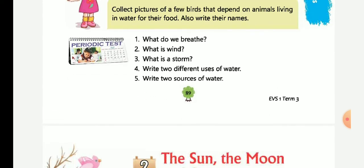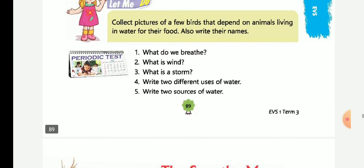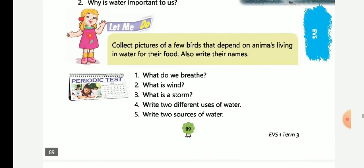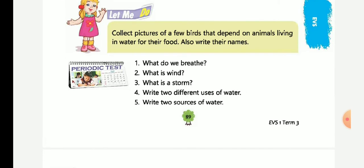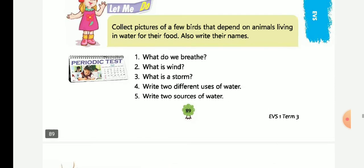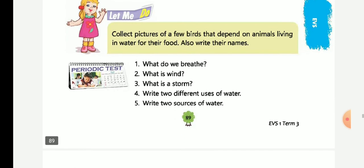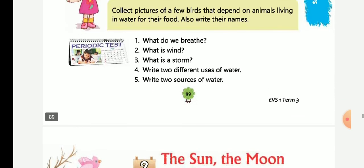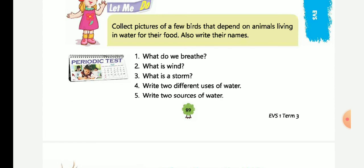Very good. Write two different uses of water: we drink water, we bathe in water, we wash clothes in water. Very good. Write two sources of water: ponds and lakes are two sources of water. Very good. So, this chapter is finished.